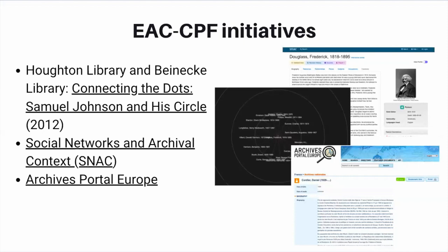While we have long included contextual information in our archival description, the development of EAC-CPF as a separate standard was revolutionary. It required a new perspective on descriptive work that is still being explored. Small, innovative projects such as the collaboration between Houghton Library and the Beinecke Library around Samuel Johnson and his circle investigated the possibilities of bringing together disparate holdings. Individual repositories have also explored the implementation of EAC-CPF, but its real benefit is at the consortial or aggregate level, where individual repositories can make contributions to a single common record for a corporate body, person, or family. The Social Networks and Archival Context, or SNAC, cooperative program demonstrates the possibilities of this aspect of EAC-CPF.